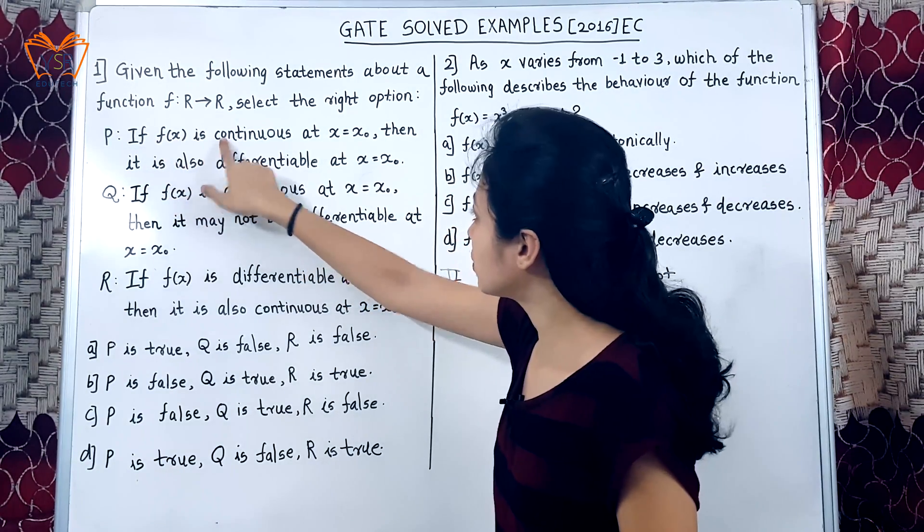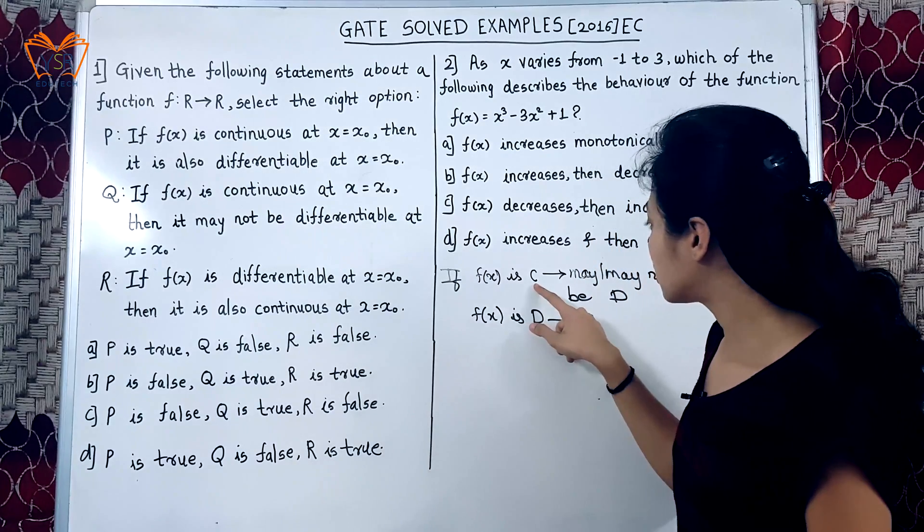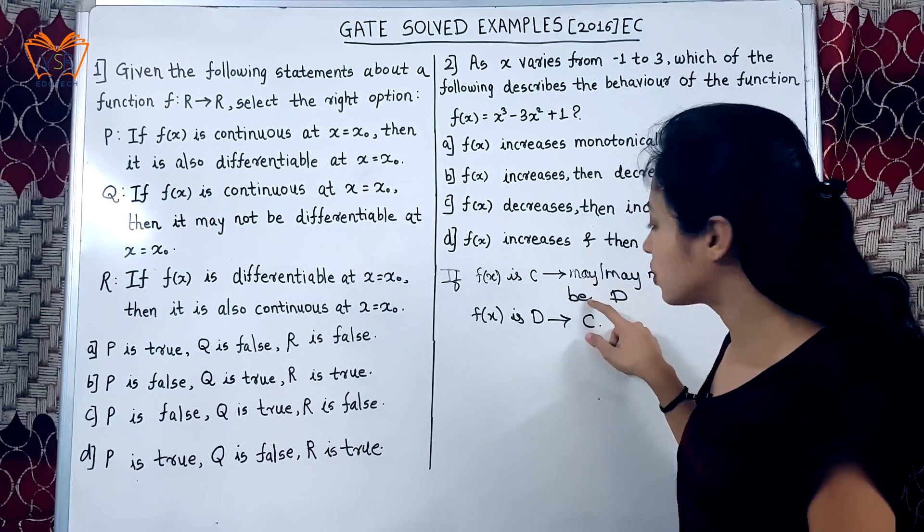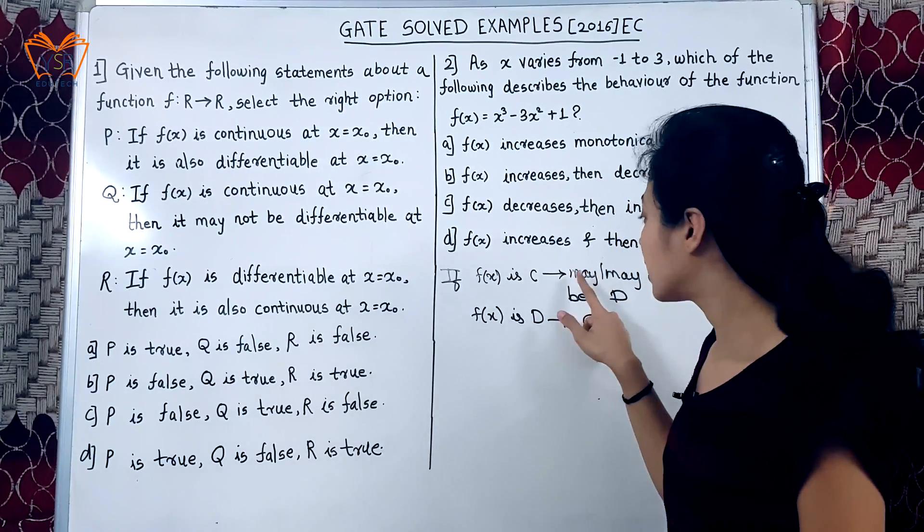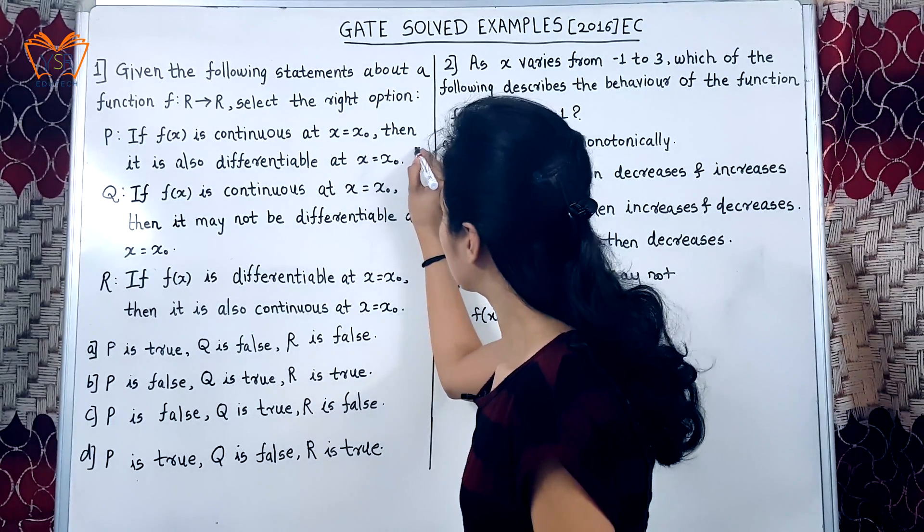If f of x is continuous, then it is also differentiable. If it is continuous, it is also differentiable. But the statement says it may or may not be. So, this is false.